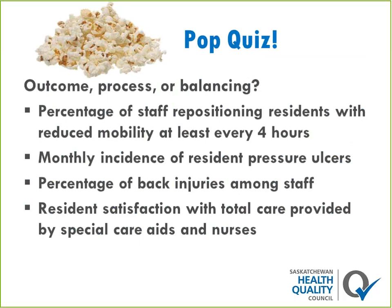Time for a quick quiz. Let's pretend we're all working together and our goal is to reduce the incidence of pressure ulcers. I've got a list of measures and I'd like you to tell me if they're an outcome measure, a process measure, or a balancing measure. The first one: percentage of staff repositioning residents with reduced mobility at least every four hours.